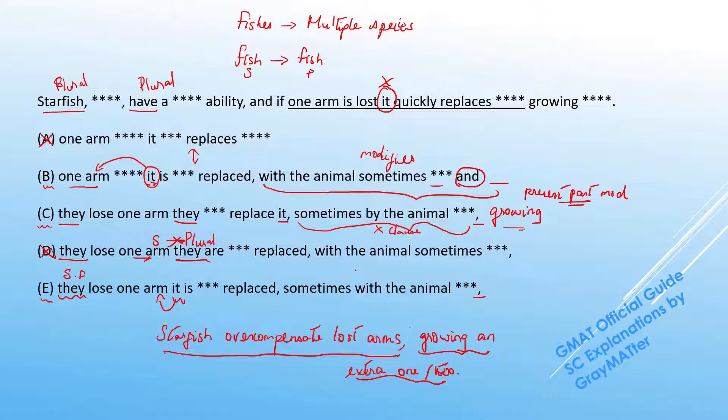In terms of C and E, we do not have such a clause construction before this present participle modifier. So thereby, this cannot indicate that this is exactly how they end up overcompensating their lost arm. So grammatically, this construction is invalid. So C and E go off.